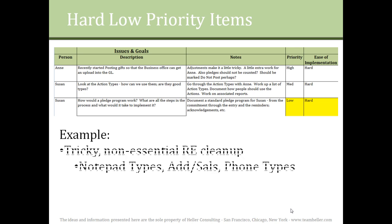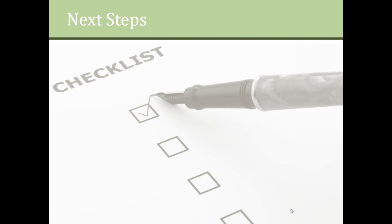These are likely to include areas of Razor's Edge that are more difficult to clean up, such as notepads, addressees and salutations, or phone types. The next step is to fit some easy, high-priority items from either column onto your calendar. You can do this with confidence now that you have a plan for tackling everything on your list. You can also refer back to this worksheet throughout the year to track your progress or make any changes.